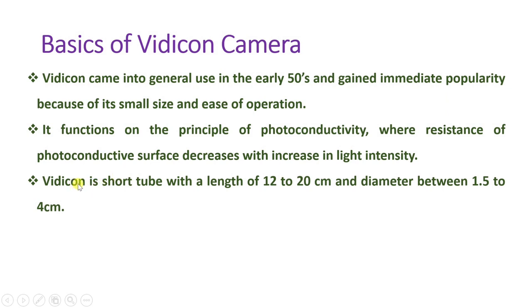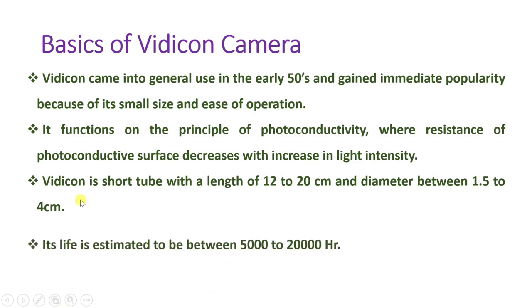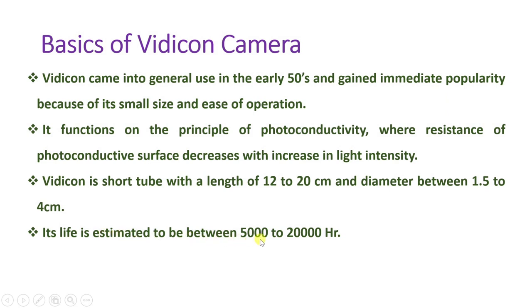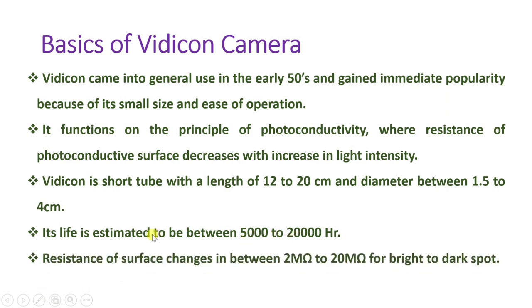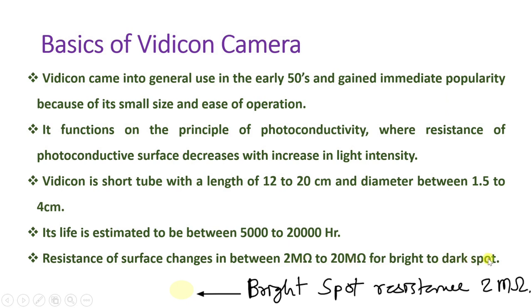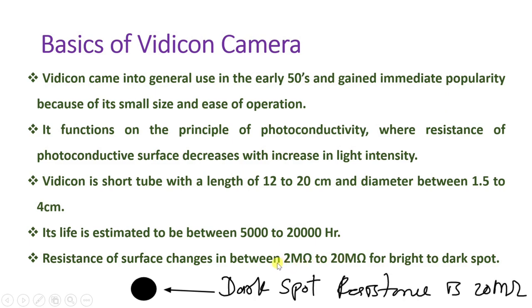The dimensions of the Vidicon camera have a length varying from 12 to 20 centimeters and a diameter in the range of 1.5 to 4 centimeters — considered a compact camera in the 1950s. Its estimated life is between 5,000 to 20,000 hours. The resistance of the photoconductive surface changes between 2 megaohms for a bright spot and 20 megaohms for a dark spot.